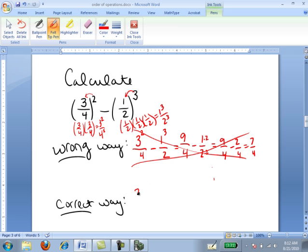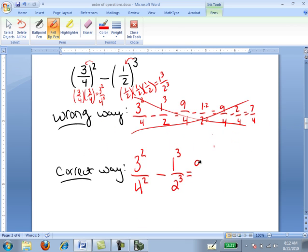You need to apply those exponents to the numerator and the denominator. So it's 3² over 4² minus 1³ over 2³, which is 9 over 16 minus 1 over 8.